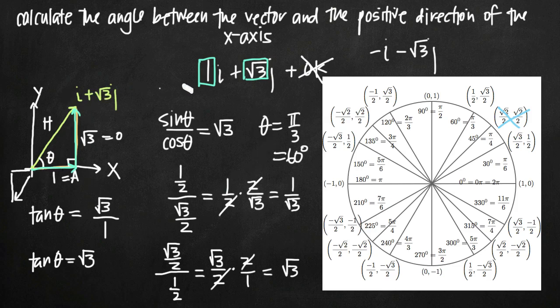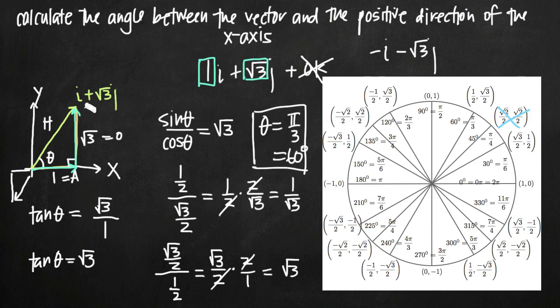Because our vector points toward the first quadrant, pi over 3 and 60 degrees is the only acceptable answer for the angle between our original vector and the positive direction of the x-axis.